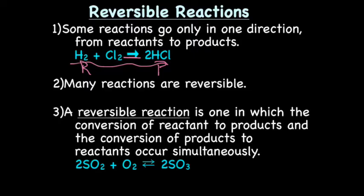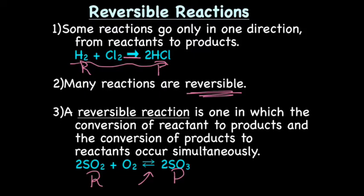It turns out that many reactions are what we call reversible. A reversible reaction is one in which the conversion of reactants to products and the conversion from products back to reactants occurs simultaneously. For example, SO2 plus O2 produces SO3. You'll notice that the arrows are going both directions. These are the reactants — the things we started with — and that is the product. However, at some point, the products start going back and making the reactants. That is a reversible reaction.